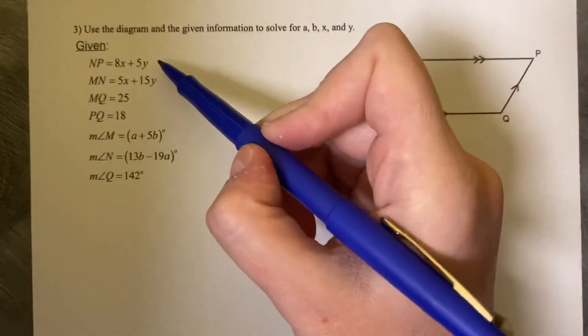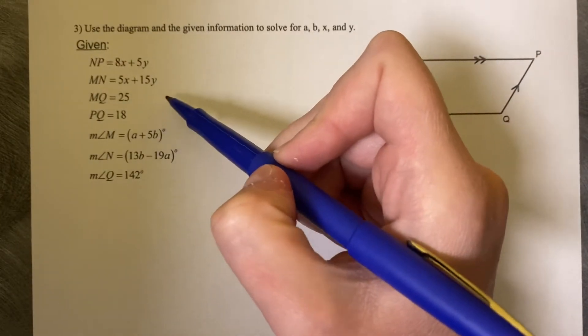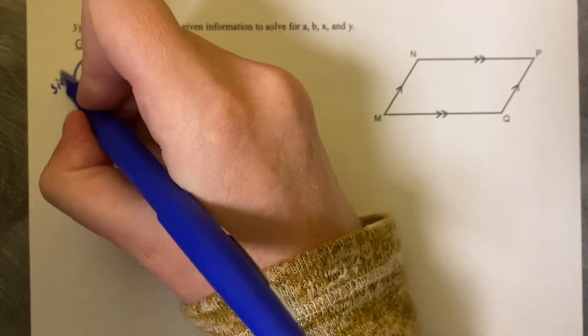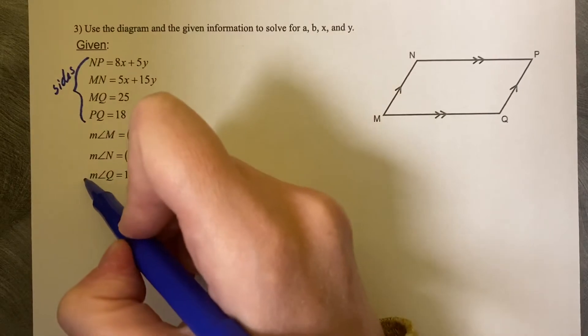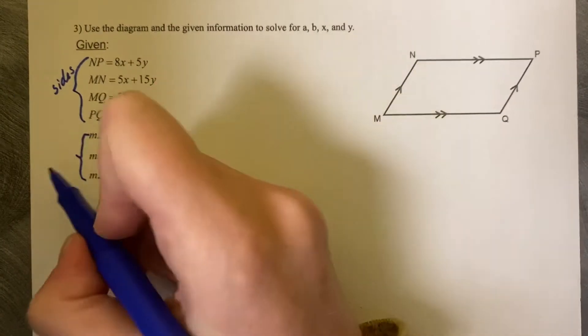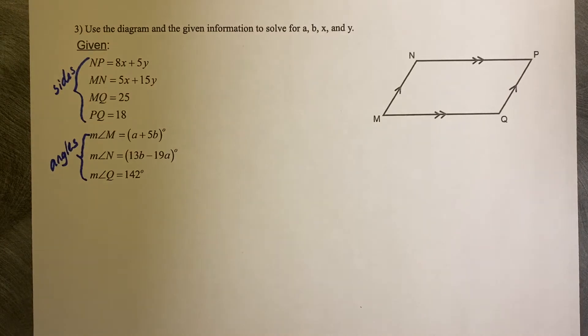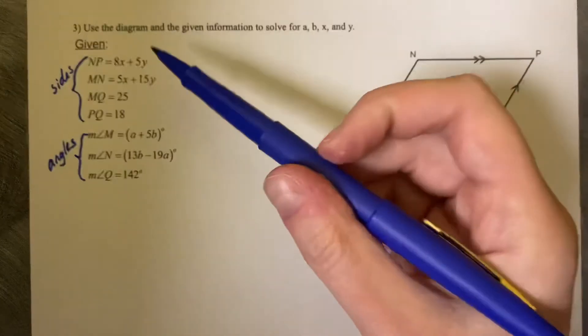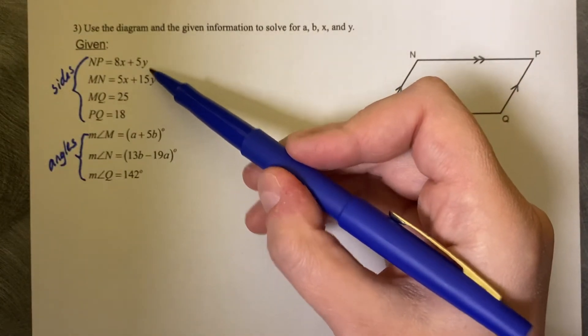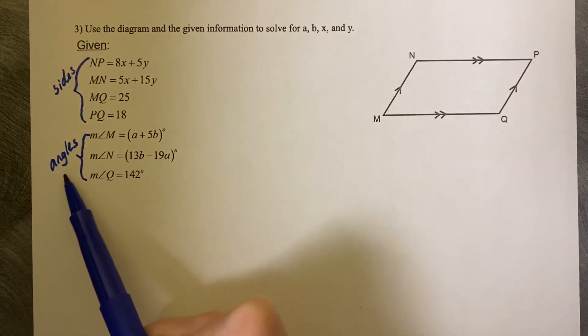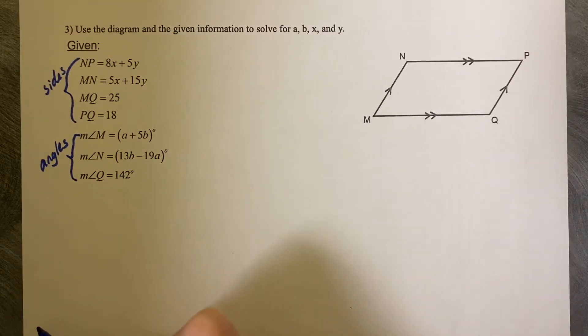What you can notice is that the top half of the information here is side lengths, and then this bottom half of information are angles. So just kind of separating our information here we can see that we've got some sides and some angles, and you can also see that the variables are grouped together. So the X's and the Y's are grouped with sides and the A's and the B's are grouped with angles. So let's label the diagram.